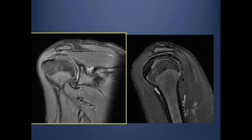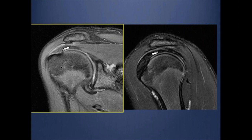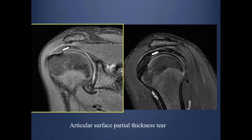If we look at the tendon here: the normal tendon has a bursal surface and an articular surface. If we get a fluid signal along the articular surface that does not extend all the way through, we call it a partial thickness tear because only part of the thickness is involved. In this case, since it is involving the articular surface, we call it an articular surface partial thickness tear.